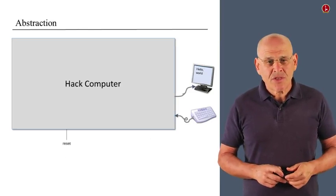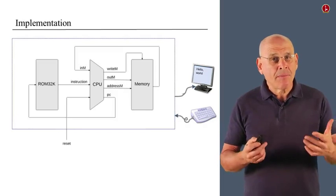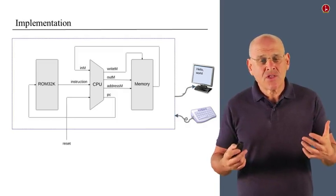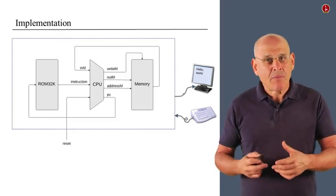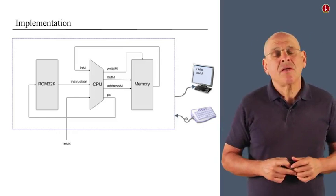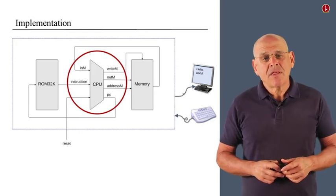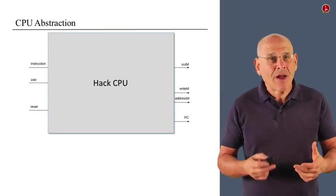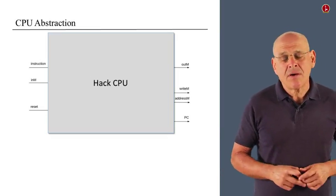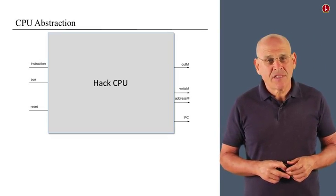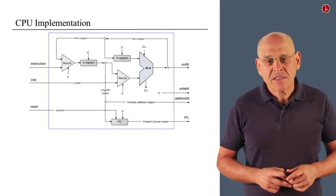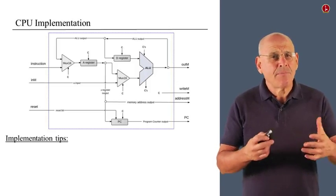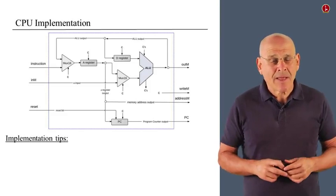So here is the abstraction of the Hack computer. And here is also the implementation that we discussed in the previous units. We see that the architecture is based on a CPU, a data memory unit, and an instruction memory unit, which we called ROM. So let us begin with the CPU. Once again, here is the CPU in abstract terms. We see here the API or the input and output units of the CPU.